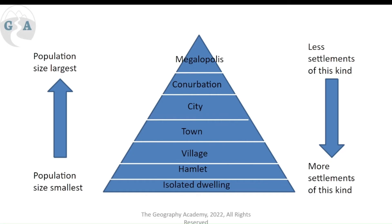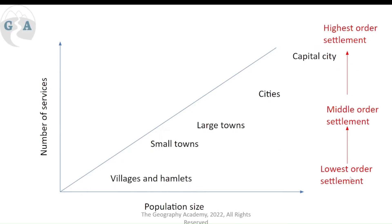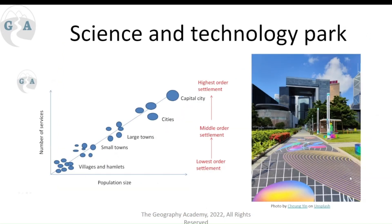The settlement hierarchy goes from isolated dwellings, hamlets, villages, towns, cities, conurbations, and megalopolis — where multiple cities grow together beside each other. Large population sizes are found at the top, but there are fewer of these cities and megalopolises. Meanwhile, isolated dwellings, hamlets, and villages are found in huge numbers but each has a small population. Services are directly correlated to population size; the capital city has the highest population and the largest number of higher-order services. Rural areas have lower-order services and the smallest population.